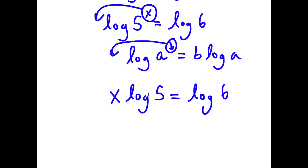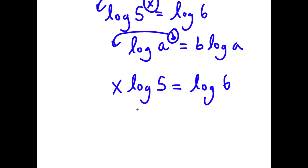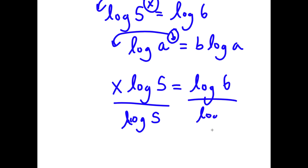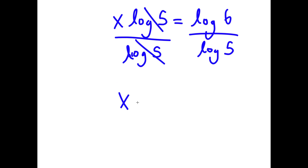Now I'm going to divide both sides by log 5, because we want to isolate x. These two cancel out and I'll have x is equal to log 6 over log 5.